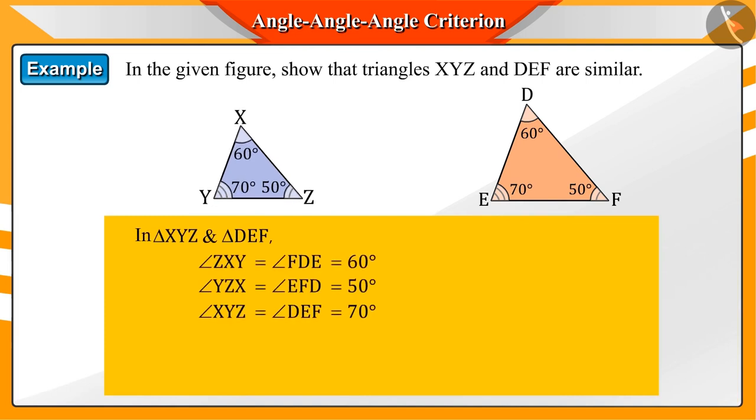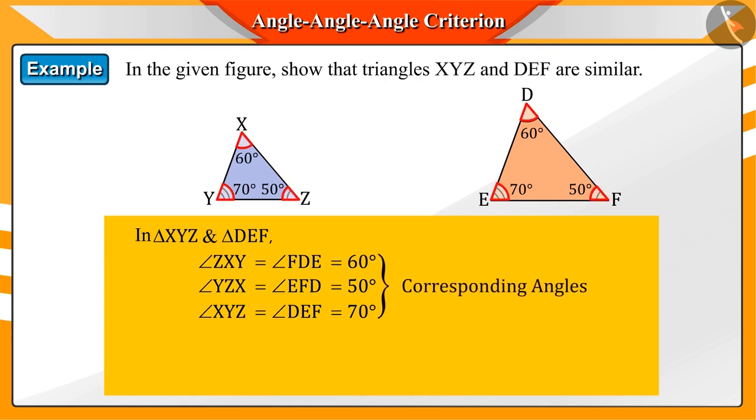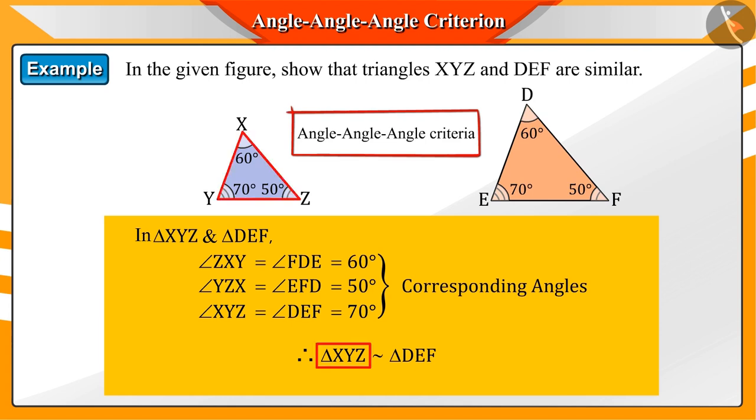Here, we see that the corresponding angles of the triangle XYZ and DEF are equal. That is, by AAA criteria, triangles XYZ and DEF are similar.